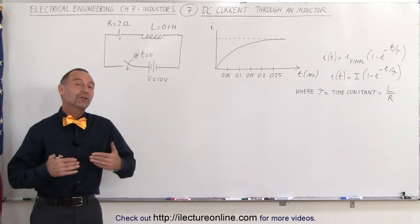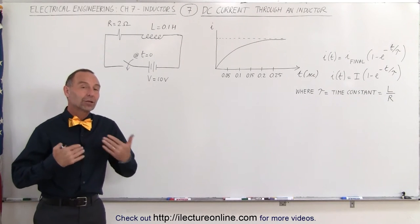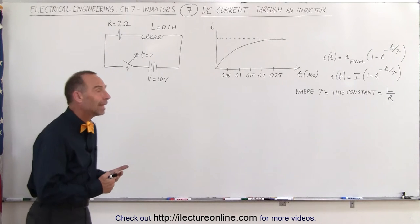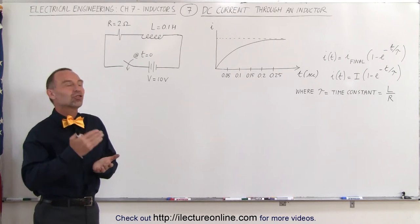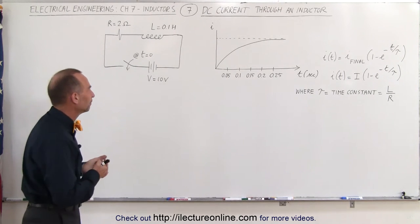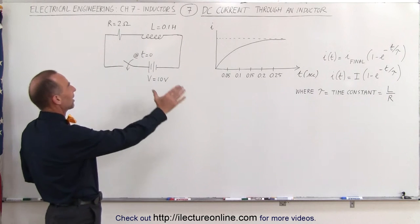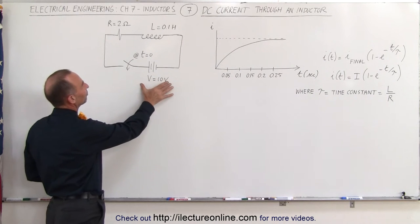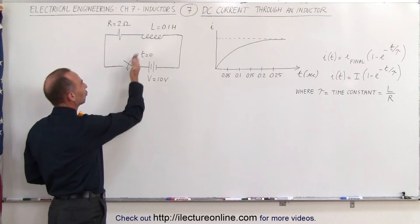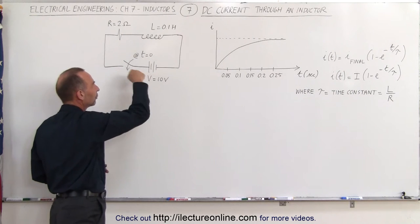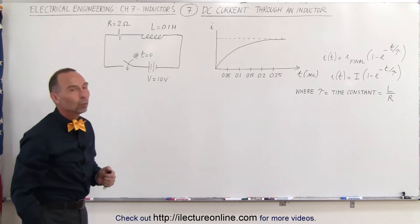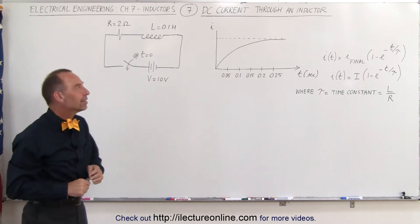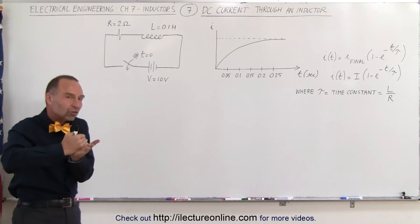Welcome to Electronline. In this video we're going to take a look at the current through an inductor and how it changes when we apply a sudden voltage change to the circuit. We have a simple circuit where we have a 10 volt voltage source, a switch that closes at T equals 0 to allow current to flow through the circuit, we have some resistance in the circuit, and we have a 0.1 Henry inductor.